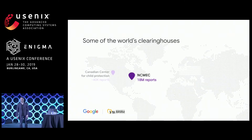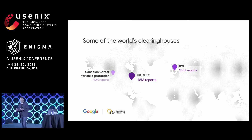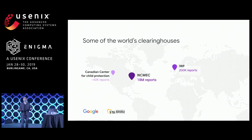NCMEC is one of many clearinghouses around the world. For example, we have the Internet Watch Foundation in the U.K., as well as the Canada Centre for Child Protection in Canada. What makes NCMEC unique is that, by law, any U.S. company has to report any potential piece of child sexual abuse material to NCMEC, and as a result, they are processing the vast majority of the reports. This gives them a unique perspective and vantage point when it comes to understanding how the ecosystem has evolved over the last 20 years.